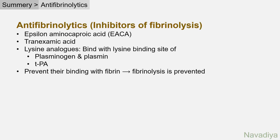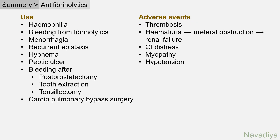Antifibrinolytics include epsilon-aminocaproic acid and tranexamic acid. They are lysine analogues that bind the lysine binding site of plasminogen, plasmin, and tissue plasminogen activator, preventing their binding with fibrin and thus preventing fibrinolysis. They are used in hemophilia, bleeding from fibrinolytics, menorrhagia, recurrent epistaxis, hyphema, peptic ulcer, bleeding after prostatectomy, tooth extraction or tonsillectomy, and cardiopulmonary bypass surgery. Their adverse events are thrombosis, renal failure in patients with hematuria, gastrointestinal distress, myopathy, and hypotension.